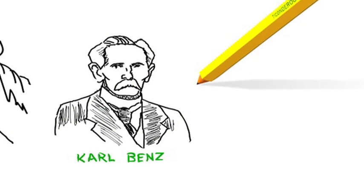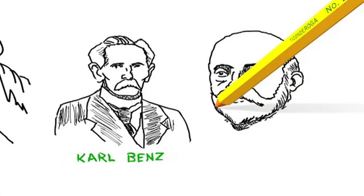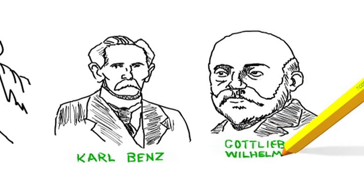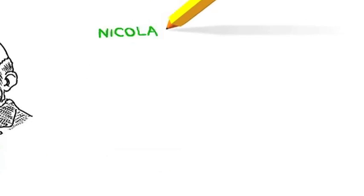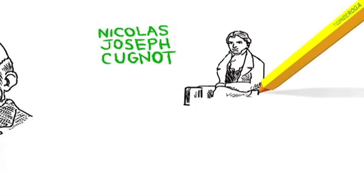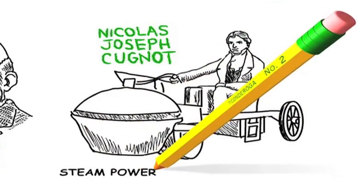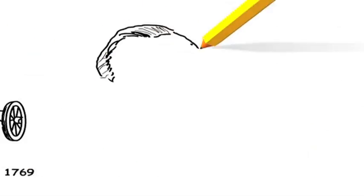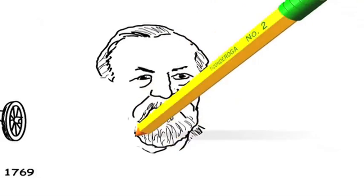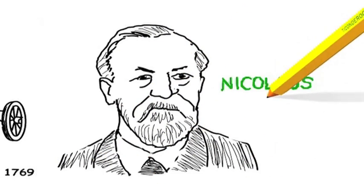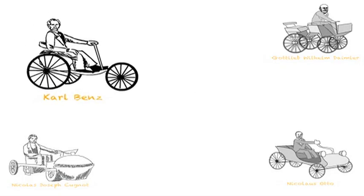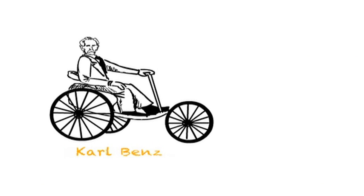While many credit Carl Benz or even Gottlieb Wilhelm Daimler as the pioneers of the first automobile at the end of the 19th century, credit should also be given to Frenchman Nicolas-Joseph Cugnot whose steam-powered road vehicle was the first of its kind in 1769, or Nicolas Otto for inventing the first effective gas motor engine in 1861. Though the popular credit given to Carl Benz is not misplaced, as he earned the first patent for the automobile in Germany in 1886.